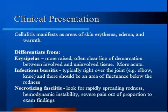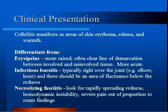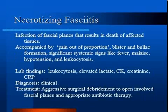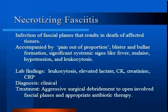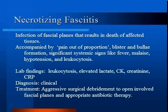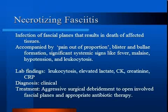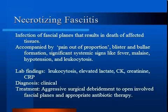Necrotizing fasciitis is a deep-seated infection of the subcutaneous tissue that results in progressive destruction of fascia and fat but may spare the skin. It is important to recognize necrotizing fasciitis as treatment differs compared to cellulitis, and there may be rapid progression from a seemingly small process to one with extensive destruction of tissue, systemic toxicity, loss of limb, or death. Features to look for include unexplained pain, blister and bullae formation, and signs of systemic toxicity.